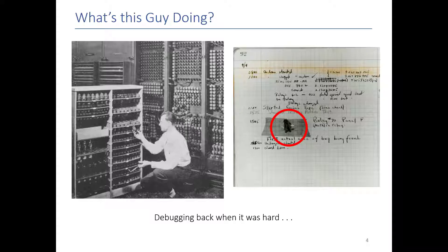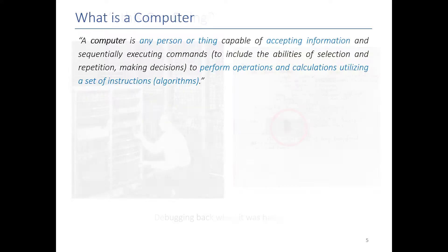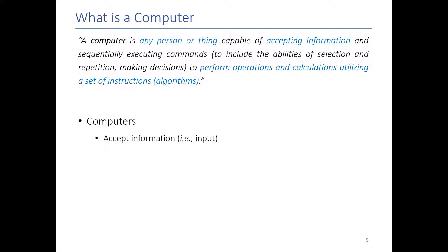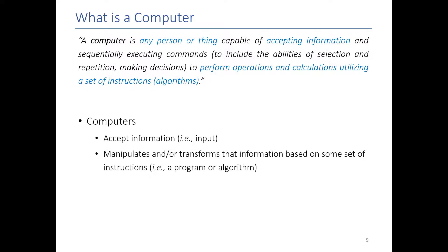I've shown you some examples of both physical computers and human computers, so let's talk in abstract about what a computer is. Here's the formal definition: simply put, for this class you can think of a computer as basically anything that can accept information, manipulate that information in some way based on some instructions — we'll call that an algorithm, but you can think of it as steps — and then output that result to the world.